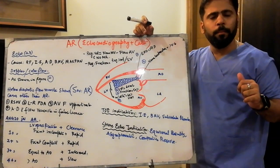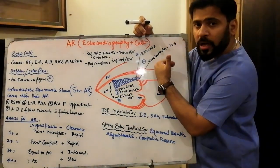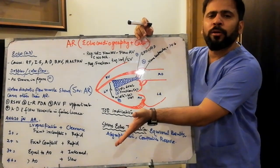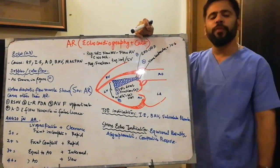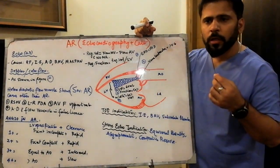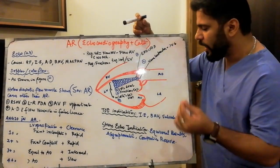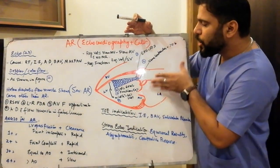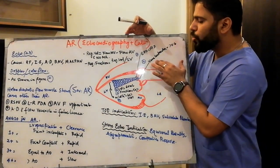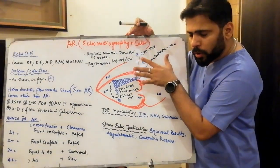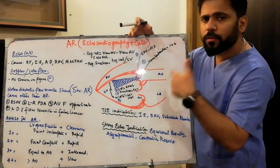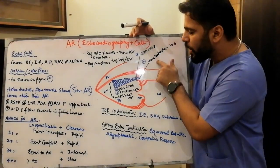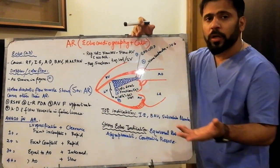To summarize: the volume sent to the aorta in systole — if 50% of that volume returns to the LV in diastole, your patient has severe AR. These five parameters — vena contracta, ERO, jet width, regurgitant volume, and regurgitant fraction — describe the severity of AR. Just remember: vena contracta, ERO, volume, fraction, and jet width.